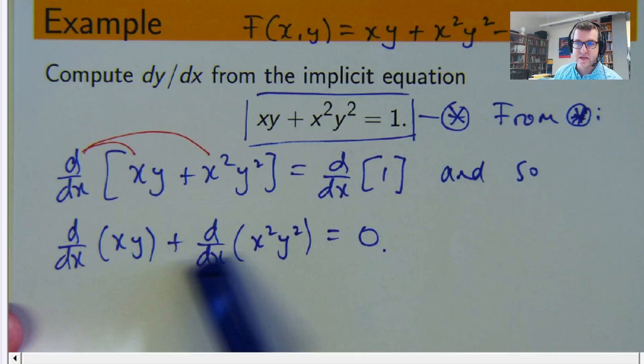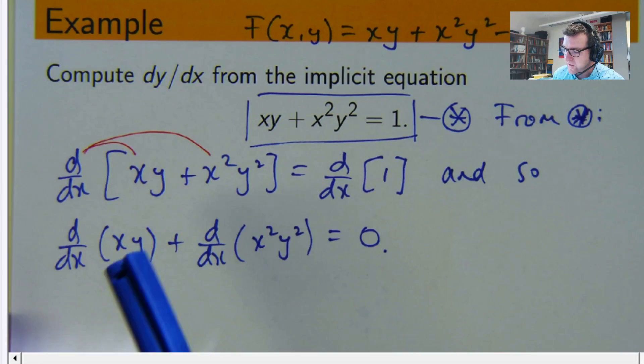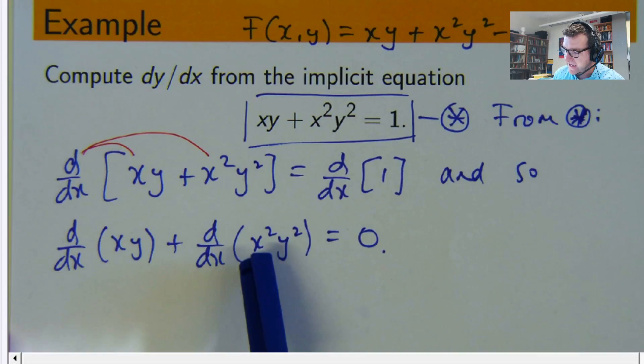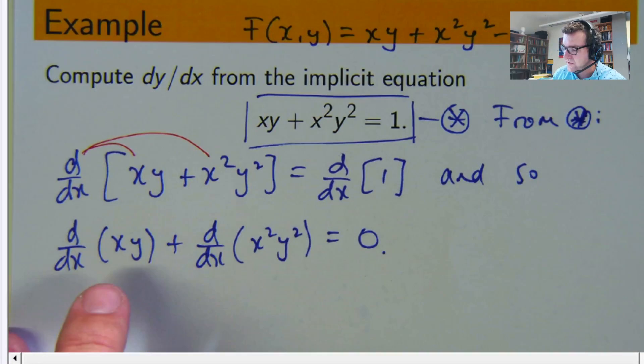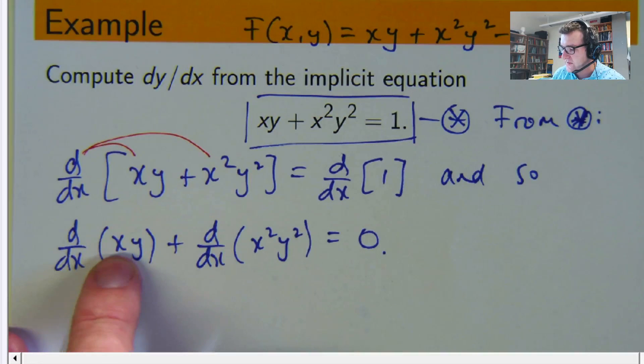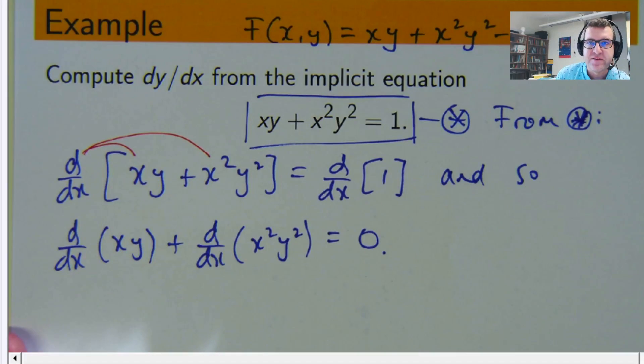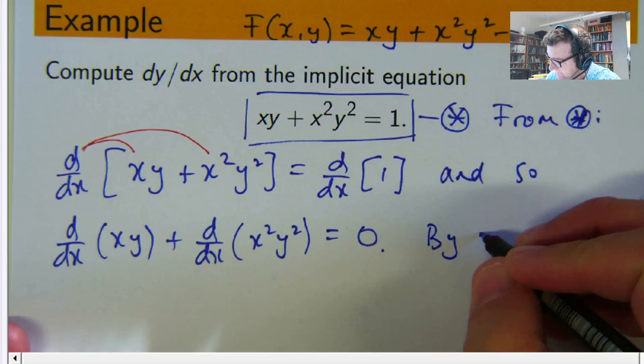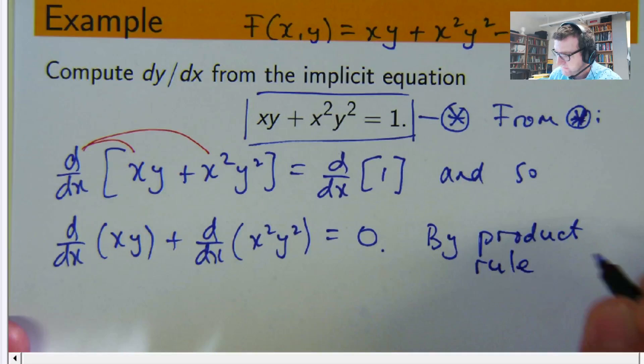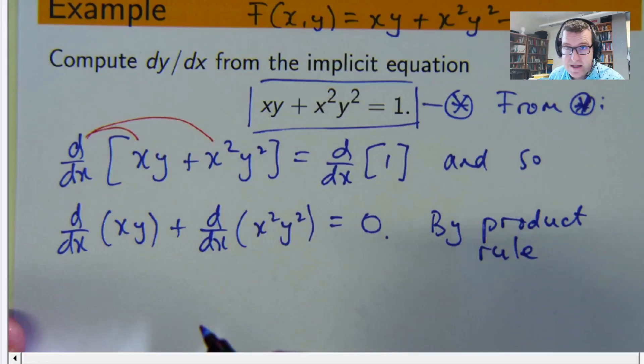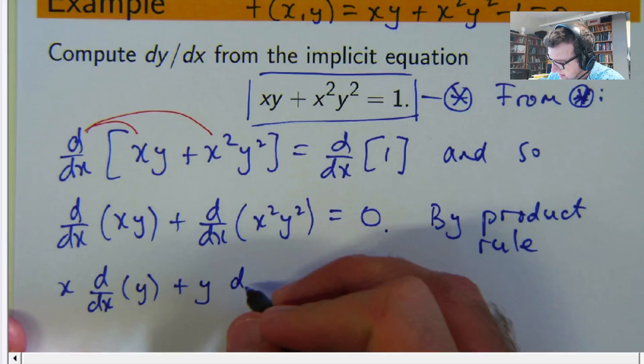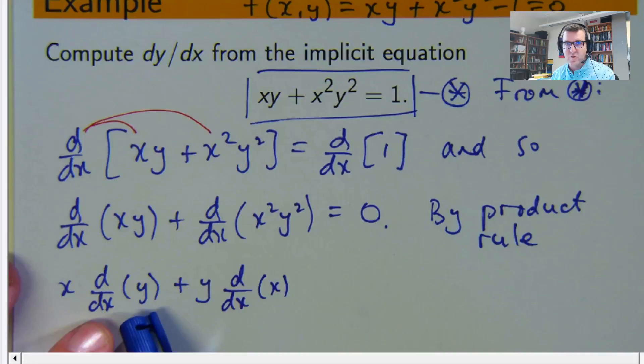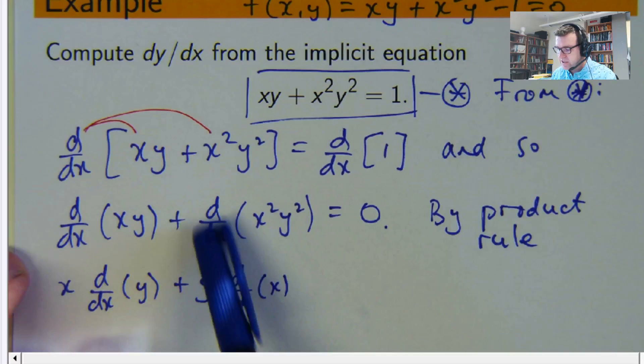Now the question is what do we do with these? Note closely that you have a product in each case. You have x times y here, and you have x squared times y squared there. So I guess there's a couple of ways you can do this. I'm going to use the product rule. And basically the product rule tells you that it's x times the derivative of y plus y times the derivative of x. So let's write that out. It's going to be x times the derivative of y times the derivative of x.